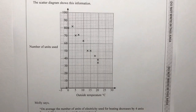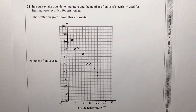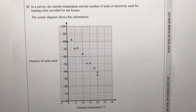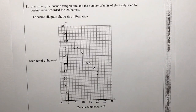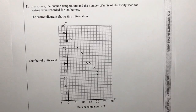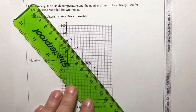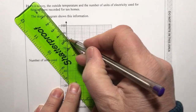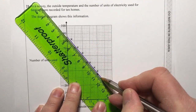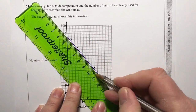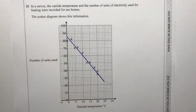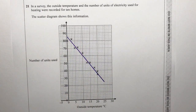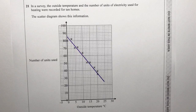So question number 21 — we're going to be looking at a scatter graph. With a scatter graph it's always useful to draw in a line of best fit. So I'm just going to draw a line in here. Now if I draw that line of best fit, it means I can take some information from this particular graph.